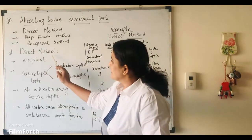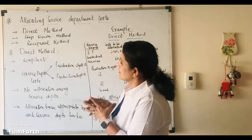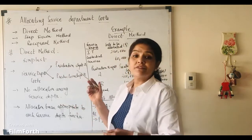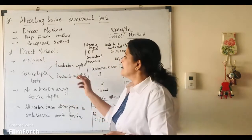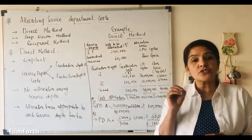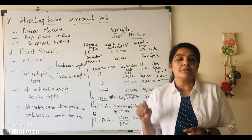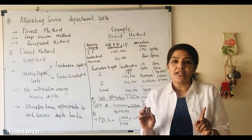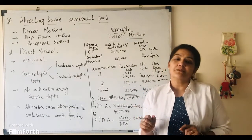Under the direct method, the main features are it is one of the simplest methods. Secondly, here under the direct method, service department costs are solely allocated to production departments. No allocation happens among service departments.